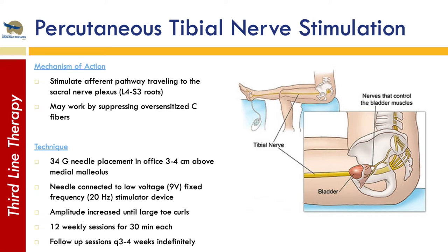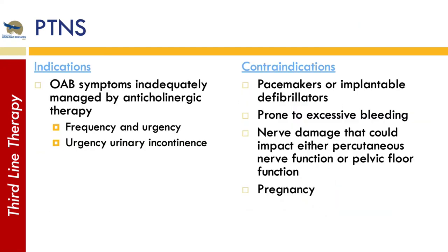PTNS is quite an involved process. The induction phase is one weekly session for 12 weeks, about 30 minutes each. Significantly, it doesn't end there — after the 12-week induction phase, patients need to come into the office every three to four weeks indefinitely to maintain the benefit. Indications are OAB symptoms refractory to first and second-line treatments. Contraindications include pacemakers or defibrillators, prone to excessive bleeding, nerve damage that could impact bladder or pelvic floor function, and it has not been studied in pregnancy.